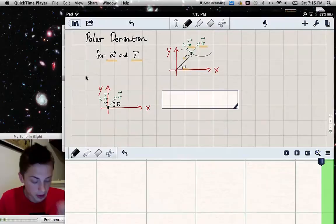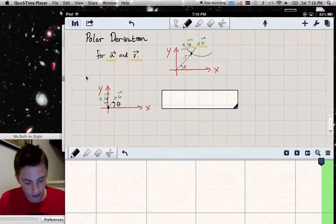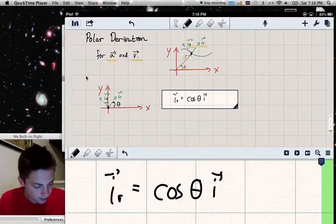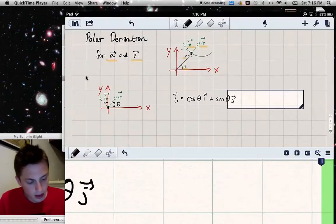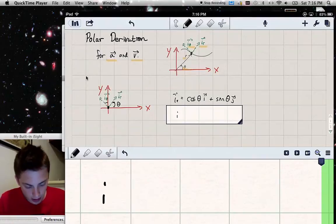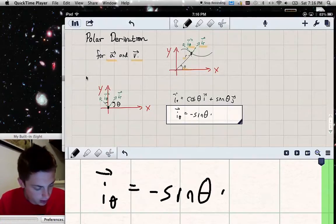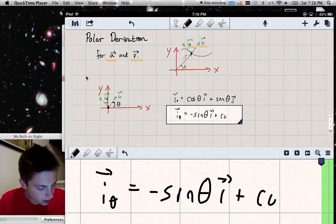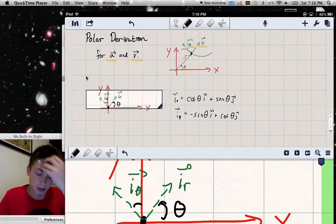So now we can express the unit vectors i_r and i_theta in terms of i and j. i_r is cosine theta i plus sine theta j. And i_theta is going to be negative sine theta i plus cosine theta j. We get that from the geometry of this picture.